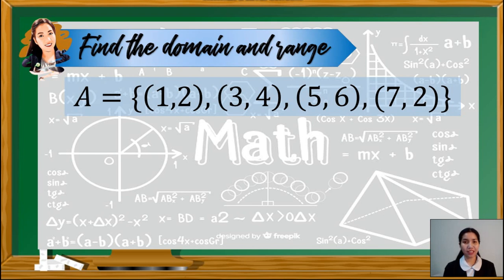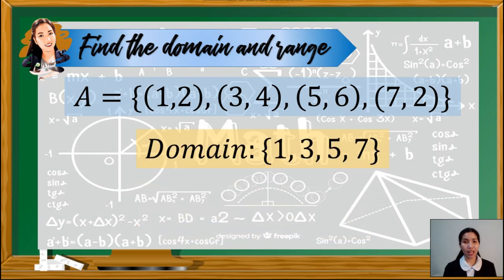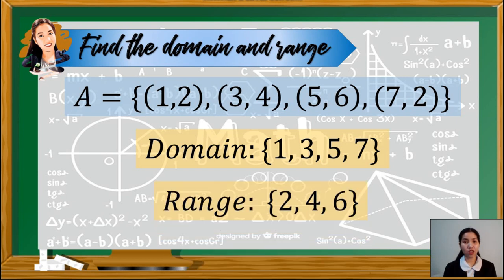Let's say we have set A with ordered pairs (1,2), (3,4), (5,6), and (7,2). The domain of this set A consists of all x elements in the ordered pairs. Thus, we have 1, 3, 5, and 7. While for the range, we have to look at the y values. Hence, we have the set with elements 2, 4, and 6.